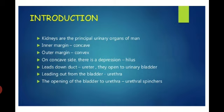They are attached to the dorsal body wall. The right kidney is slightly lower than and smaller than the left one. The kidney is a dark brown, bean-shaped organ having a concave and a convex side. The concave side of each kidney is towards the vertebral column.